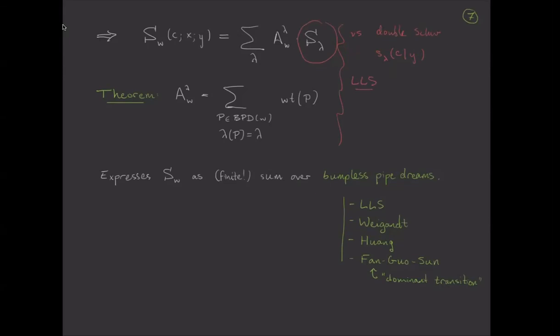And probably lying behind this, there is a formula due to Lamley and Shimazono, which expands a back stable Schubert in terms of double Schubert. So SW as a sum of stuff times these double Schubert, and it has a similar flavor to this one.